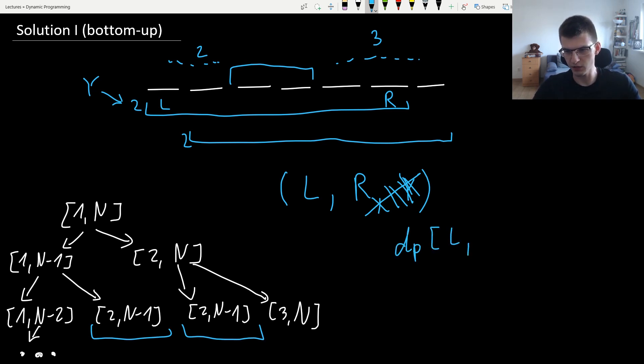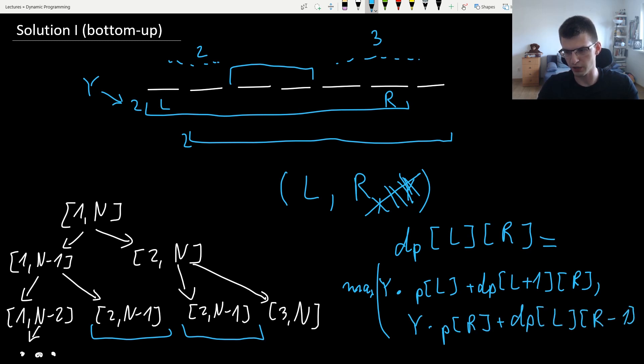We said the state is DP[L,R] and to compute it you must consider two choices that you have when you have interval L, R. Two possible choices are take the leftmost or the rightmost wine. If you take leftmost, you get Y times P[L], this is the score you get, plus DP[L+1, R]. We are interested in the maximum, max of that and the same thing from the right: Y times P[R] plus DP[L, R-1]. That will be a correct transition.